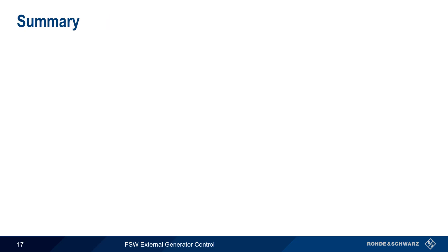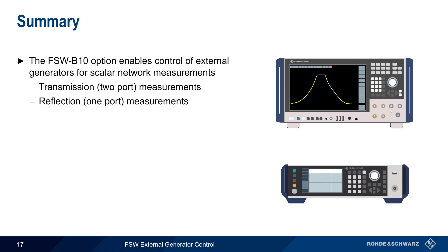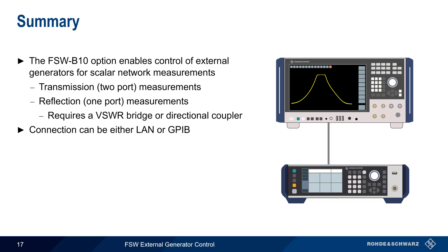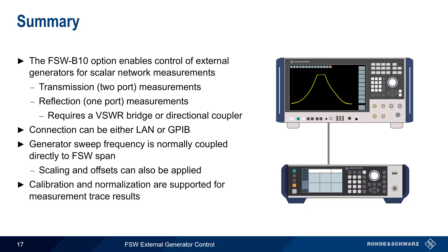Let's end with a brief summary. The FSW-B10 option enables the FSW to control external RF signal generators for scalar network measurements. Both transmission (2-port) and reflection (1-port) measurements can be made, though reflection measurements require an external VSWR bridge or directional coupler. The FSW controls the generator over either a LAN or GPIB connection. The generator sweep frequency range is normally coupled directly to the FSW span, but can be modified by a scale factor and/or an offset. The FSW supports both calibration and normalization of measurement trace results.